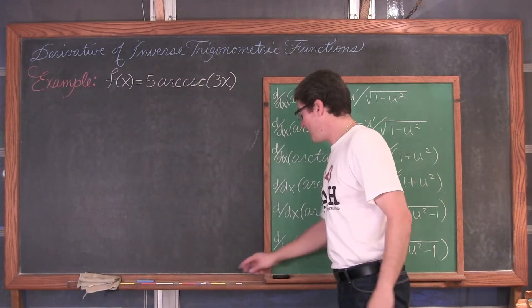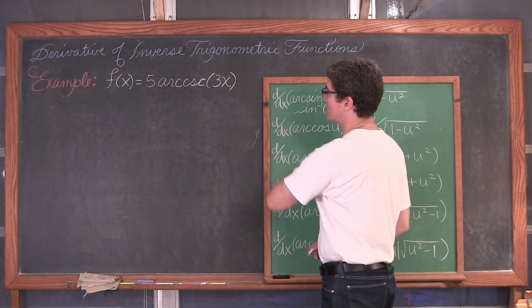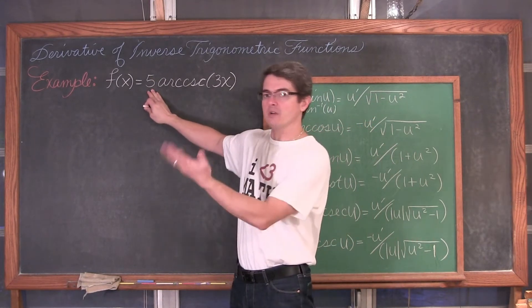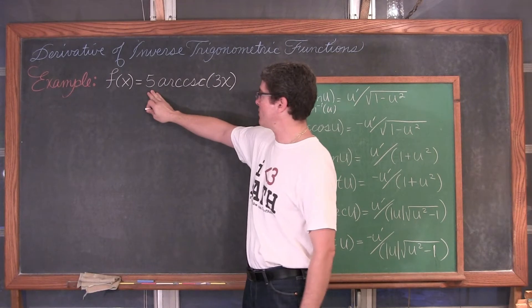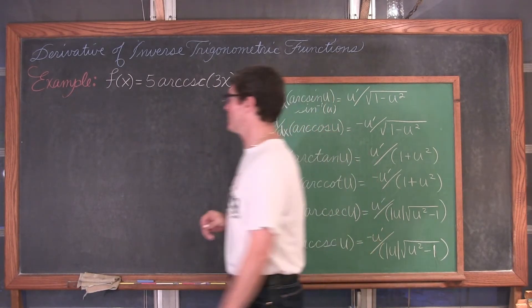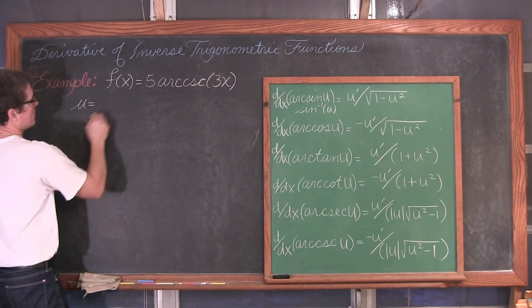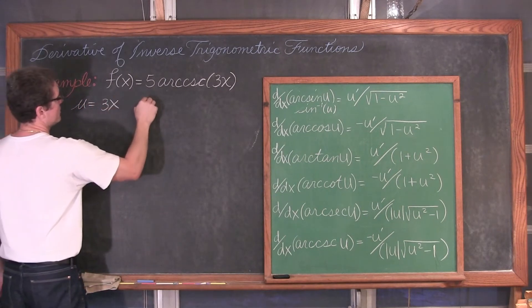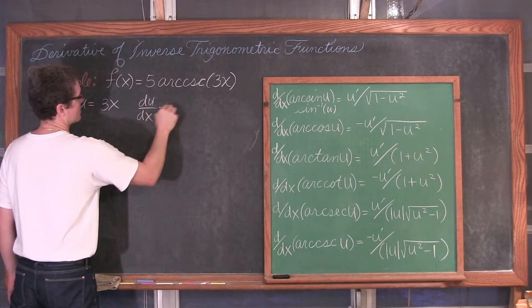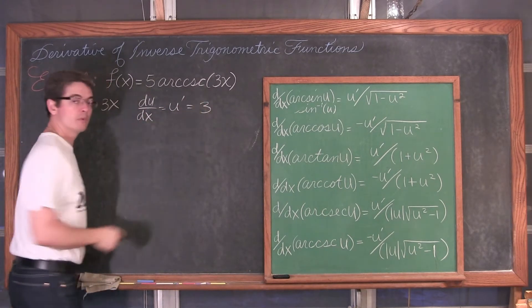For the first example, we have f of x equal to 5 times the arc cosecant of 3x. We have a constant out front which we are just going to let float down. We have an inside function of 3x, so we are going to let u equal 3x. Then the derivative of u with respect to x, or u-prime, is going to be equal to 3.